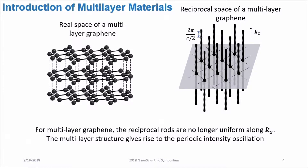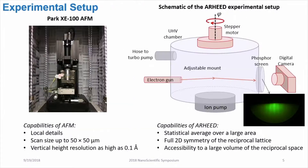This multilayer structure gives rise to periodic intensity oscillation, and from this intensity oscillation we can calculate the lattice constant in the vertical direction.